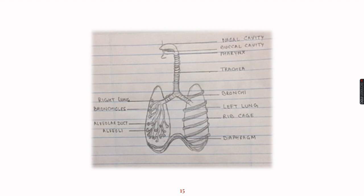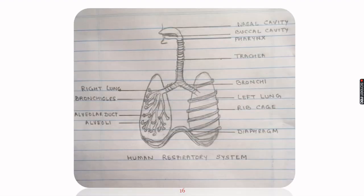Label on the left side also and our diagram is now complete. So this is the diagram of human respiratory system. You need to practice this diagram 2-3 times to get better results.